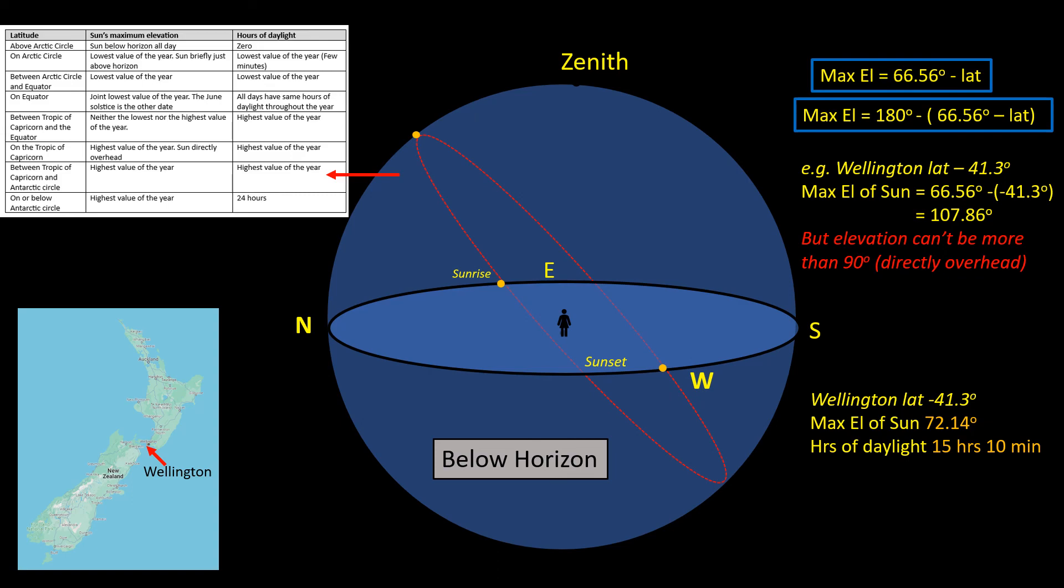So take the example of Wellington. This means the maximum elevation is 72.14 degrees, the highest of the year.